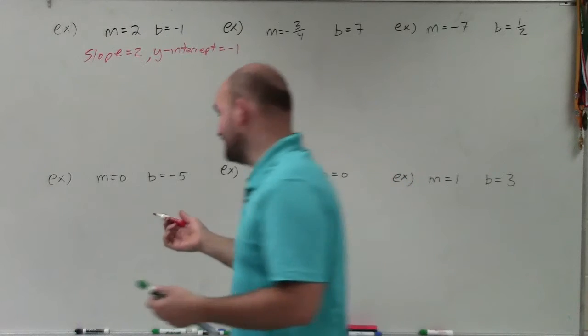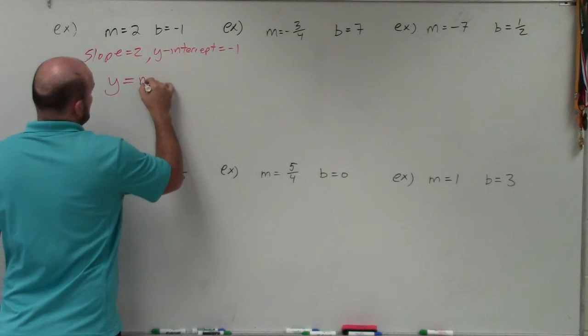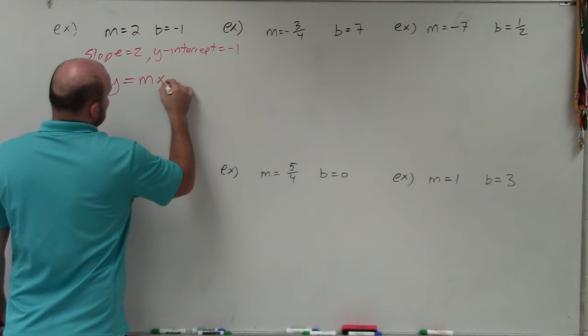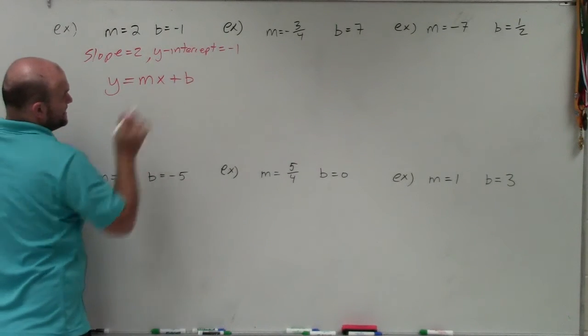To write it in slope-intercept form, we need to know what the equation is for slope-intercept form, or at least the form, and that is y equals mx plus b, where again, m represents the slope and b is your y-intercept.